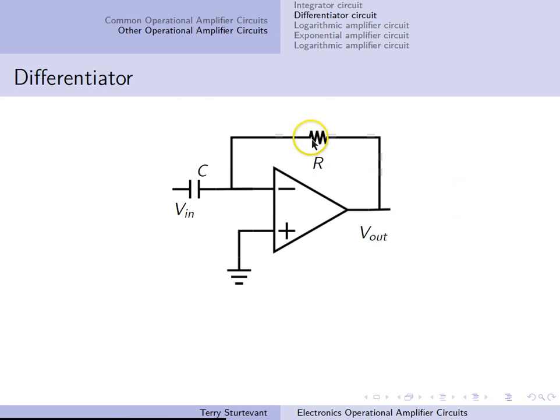In the differentiator circuit, the capacitor has replaced the input resistor on the inverting amplifier, so the output is the derivative of the input over time. The output is minus RC times the derivative of VIN DT.